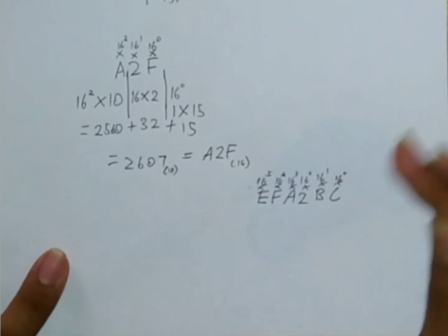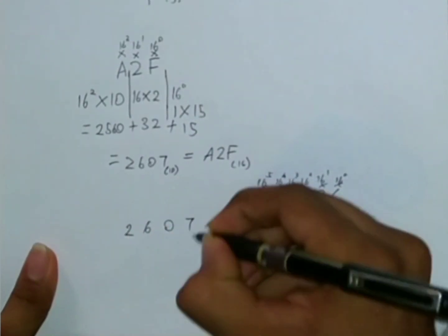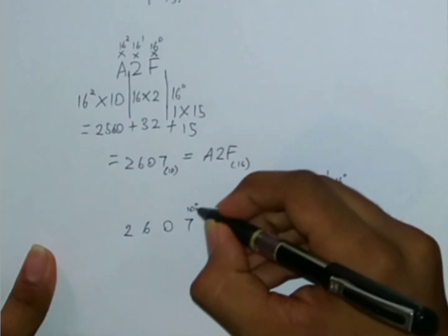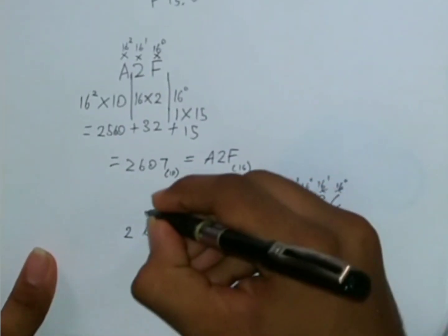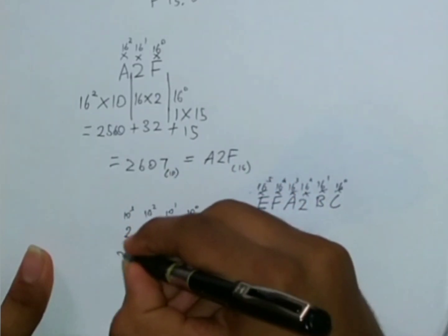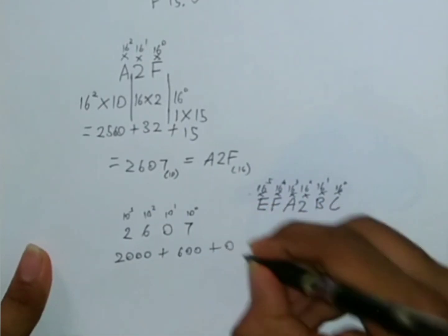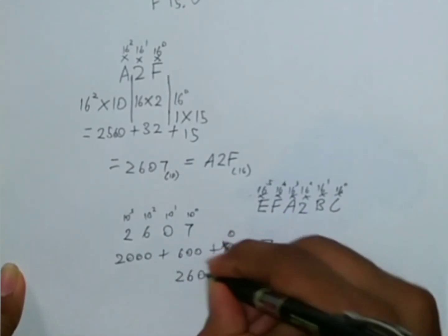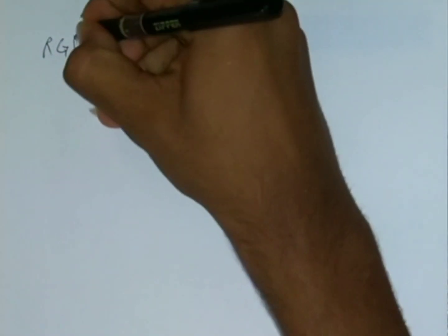So in the case of decimals, it is what it is. So 2607 — this is 10 to the power 0, 10 to the power 1, 10 to the power 2, 10 to the power 3 — which is 2000 plus 600 plus 0 plus 7, so it's gonna be 2607 as it is. So no change.